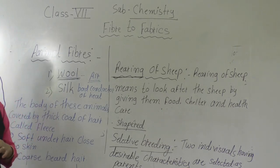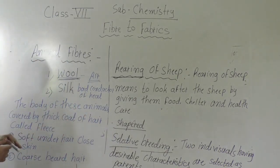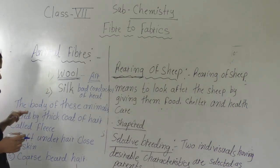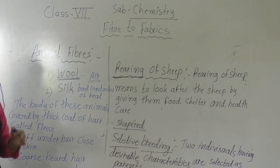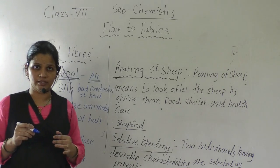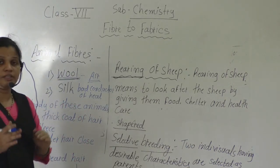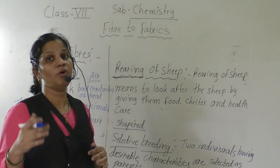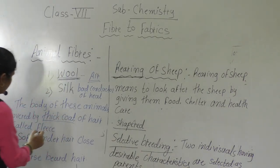In this lesson, first we will see only about the sheep — what is a sheep and how we are getting the wool. The body of these animals — sheep, camel, goat — is covered by a thick coat of hair called fleece. They are having this thick coat of hair because they are mostly found in hilly areas where the temperature is very low. So they have a thick coat of fur as an adaptation to protect them from cold.